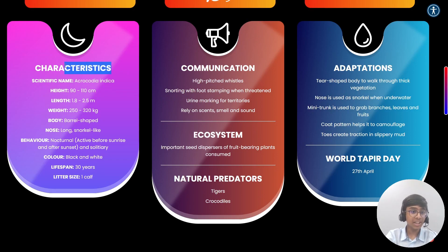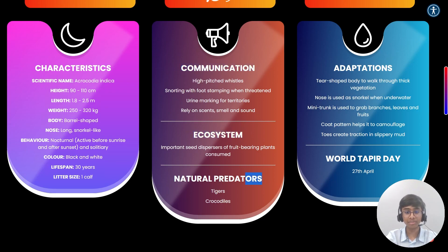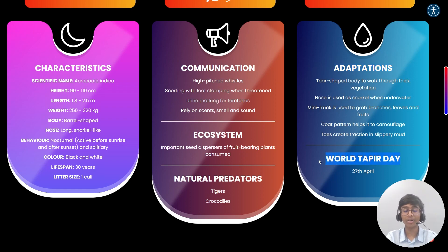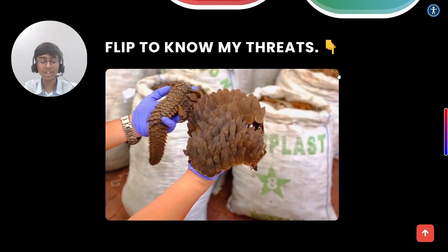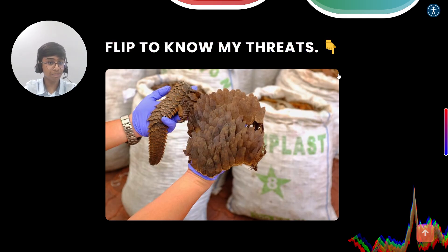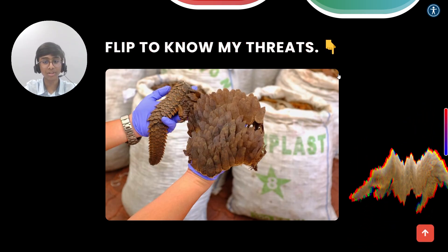Three Informator cards pop up on the second row. They detail about the characteristics of the animal, their communication skills, role in the ecosystem, their natural predators, their specific adaptations and the days which are celebrated around the world. The wording 'flip to know my threats' with the glitch effect is to symbolize the shaky populations of the animal.